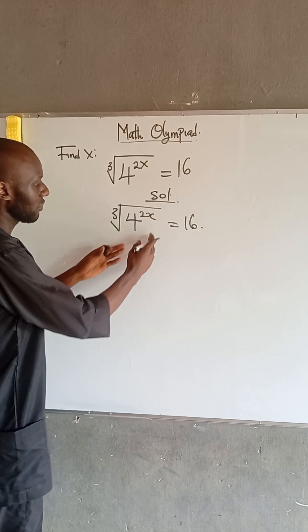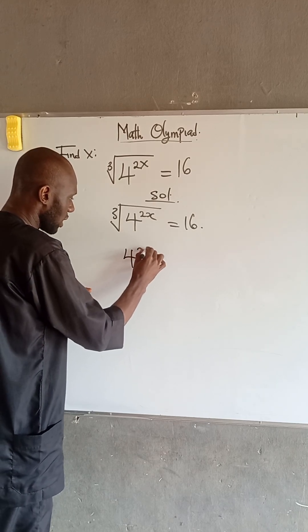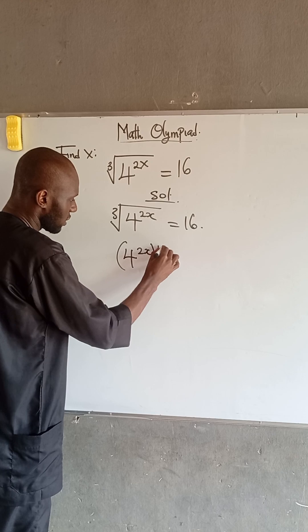Now, at this point, the left-hand side can be expressed as 4 to the power of 2x, to the power of 1 divided by 3.